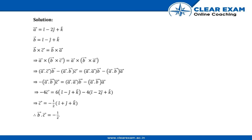We have vector a = i cap minus 2 j cap plus k cap, and vector b = i cap minus j cap plus k cap. As given, b cross c equals b cross a. Now introducing a cross product on both sides, we have a cross (b cross c) equals a cross (b cross a).